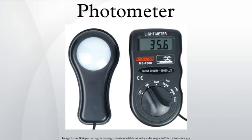A photometer, generally, is an instrument that measures light intensity or optical properties of solutions or surfaces. Photometers measure illuminance, irradiance, light absorption, scattering of light, reflection of light, fluorescence, phosphorescence, and luminescence.